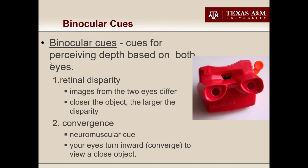The second binocular cue is convergence — a neuromuscular cue. Hold your finger out at arm's length and focus on the tip with both eyes. Slowly bring your finger closer and closer until you touch your nose, keeping your eyes open. That pressure you feel in your eyes as they cross is the neuromuscular cue. Your brain uses that neuromuscular information to tell you how far away or close something is — the stronger the pressure, the closer the object.